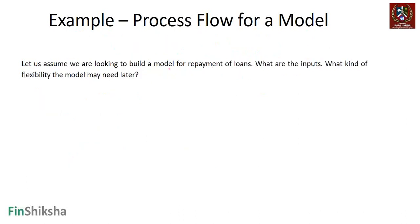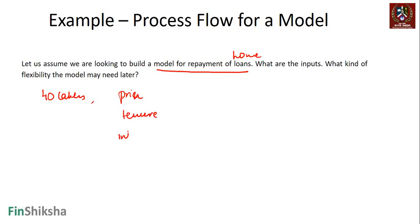Let's take another example. Let's say we are trying to build a model for repayment of loans - let's make this a home loan. Let's say someone takes a home loan of 40 lakhs. What do I need? I need the principal amount, I need the tenure, and I need the interest rate. Those are the major parameters. Once I have the tenure of the loan, the interest rate, and the principal amount, I know that I can solve this to find out what is going to be my EMI.